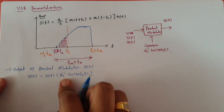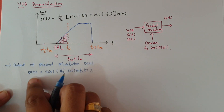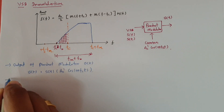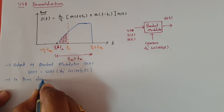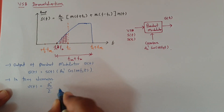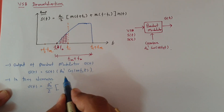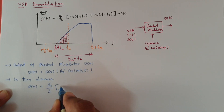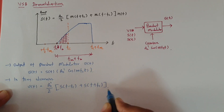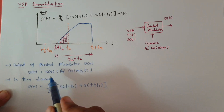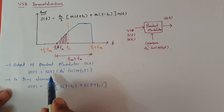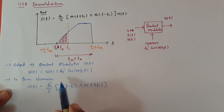Now let us identify this response in the frequency domain to get a proper idea of V(F). In the frequency domain, V(F) = (AC'/2) × [S(F − FC) + S(F + FC)]. There will be two components: one is addition of frequency and one is subtraction of frequency. The amplitude will get halved.